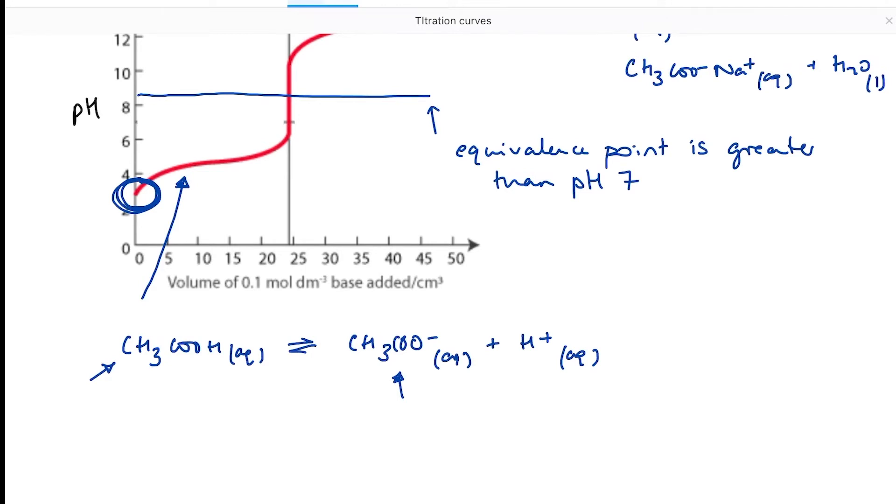What I've got therefore is a buffer solution, because I have both the acid, so the weak acid, and its conjugate base present in my conical flask. So when I start to add, when I start to add hydroxide ions from my burette into my conical flask,